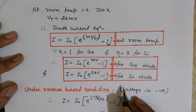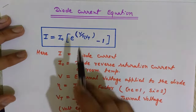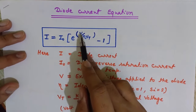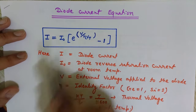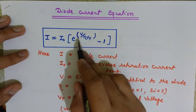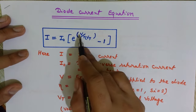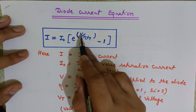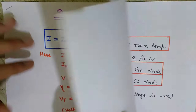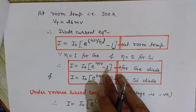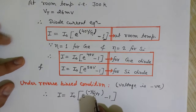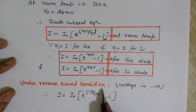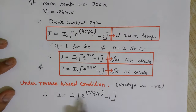Now under reverse bias condition, the voltage V in the equation can be positive or negative — negative is for reverse biasing of the diode. For reverse biasing, we replace V with −V. So the equation becomes: I = I₀(e^(−V / eta·VT) − 1). It is the same equation, just with V replaced by −V because voltage is negative in reverse bias.